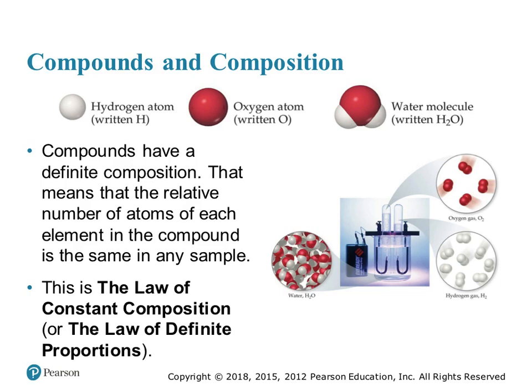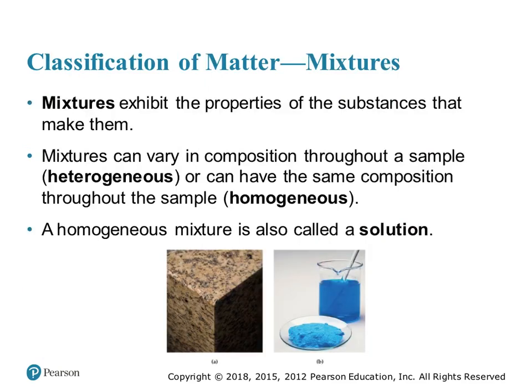Compounds are made up of two or more different elements chemically combined. They have a definite composition, meaning that if you change the ratio of the atoms in the compound, you are going to form something else. Mixtures usually exhibit the properties of the substances that make them. They can be heterogeneous, with a variable composition throughout, or homogeneous, with a constant composition throughout. Homogeneous mixtures are referred to as solutions, because they have an even distribution of molecules in the solvent — usually water in chemistry.